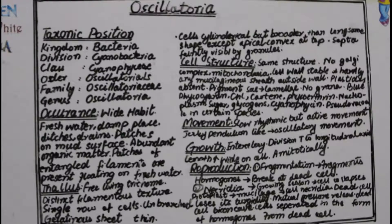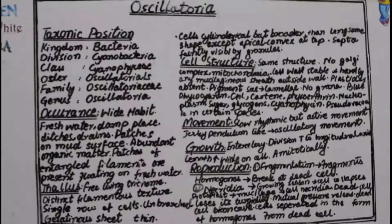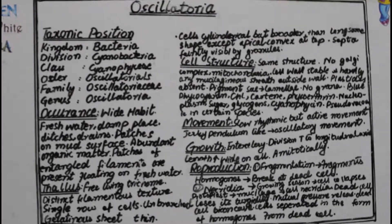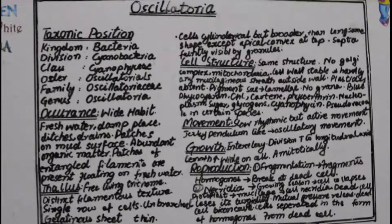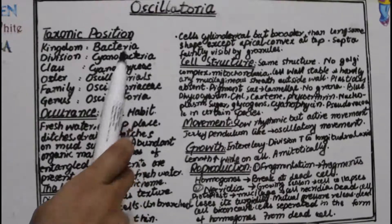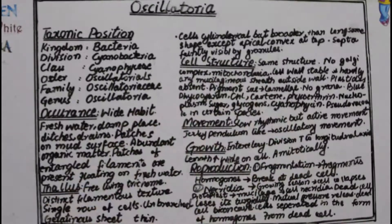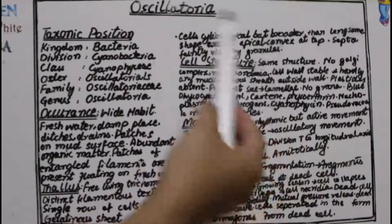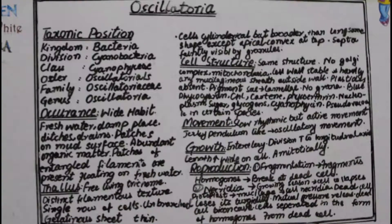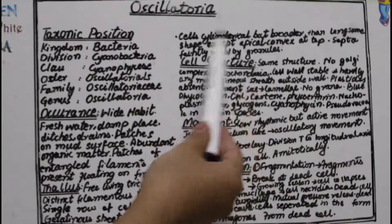In a single trichome, a single row of cells is present side by side. It is unbranched and covered with a thin gelatinous sheath. The cells are cylindrical in shape.